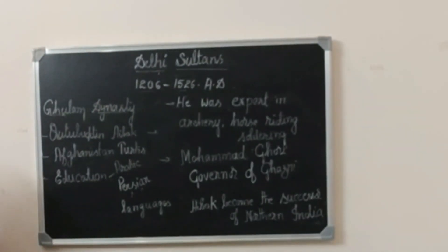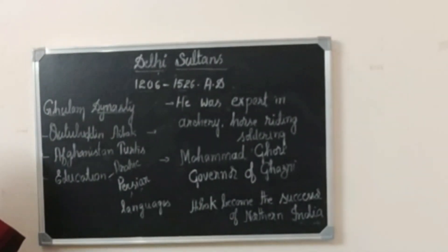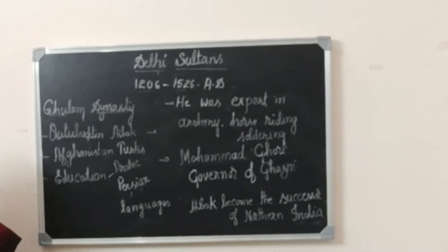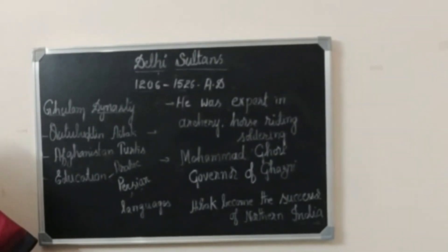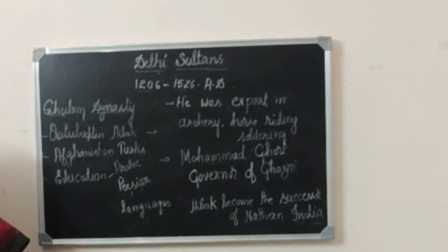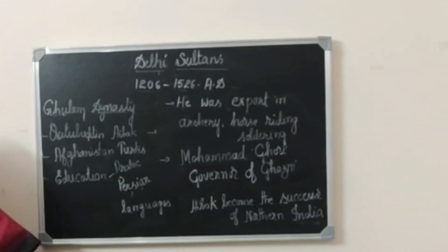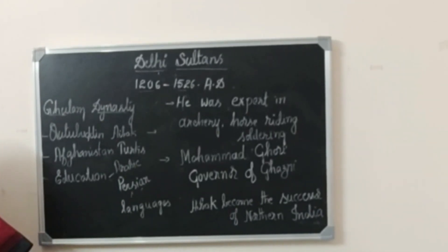Muhammad Ghori appointed Qutb-ud-din Aibak as a successor of North India. Aibak became an independent king and he ruled for four years. During his reign, he started the construction of the Qutb Minar.